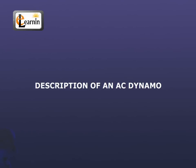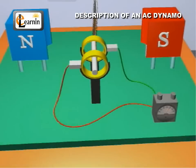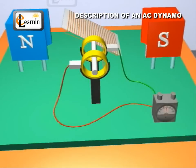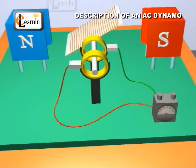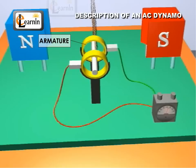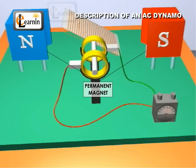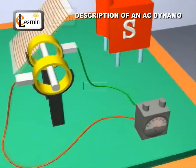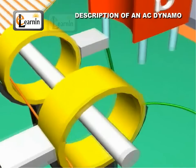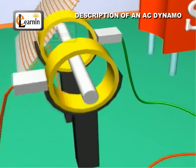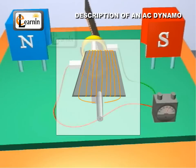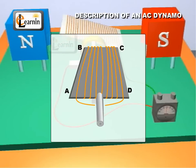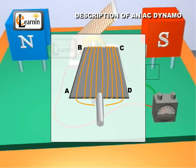Description of an AC dynamo: An AC dynamo consists of four major parts. Number one: armature. Number two: permanent magnet. Number three: two slip rings. And number four: two carbon brushes. The armature ABCD consists of a coil made of insulated copper wire.